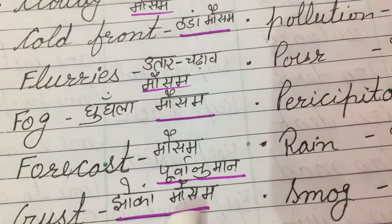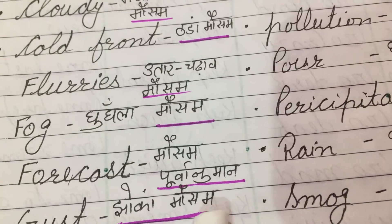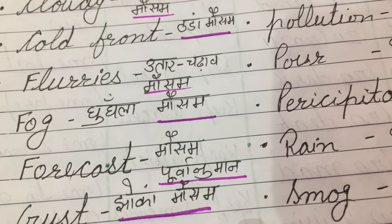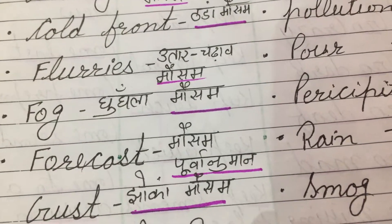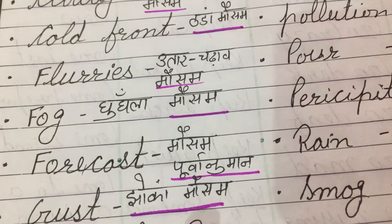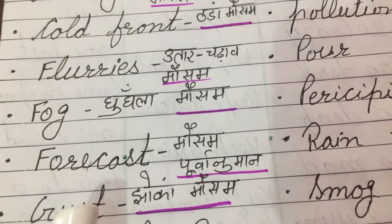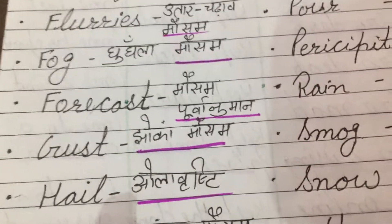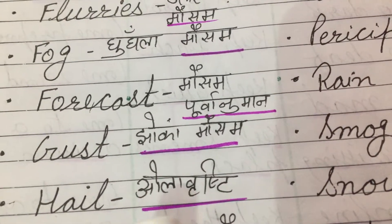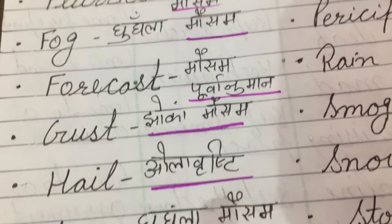Forecast means Mousam Poorvanuman, means Mousam ki janakari pahalye mili, means Forecast. Gust means Jhoka mousam.